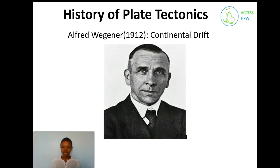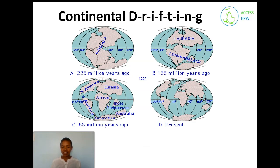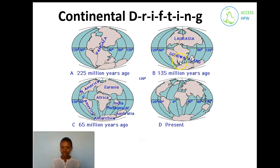Alfred Wegener is well known for his theory of continental drifting, which states that continents drift and still continue to do so. At the beginning they used to fit like a puzzle. 225 million years ago it was one landmass called Pangaea. Then 135 million years ago it split into Eurasia and Gondwanaland. By 65 million years ago we have North America, South America, Eurasia, Africa, India, Madagascar, Australia, and Antarctica.